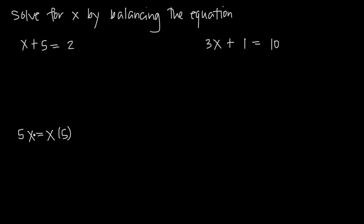So if we want to divide the left hand side by 2, we also have to divide the right hand side by 2 to keep the equation balanced. And if we get a little fancier and want to take the square root of the left hand side, we also have to take the square root of the right hand side in order to keep the equation balanced. Just remember, whatever you do to one side, you also have to do to the other side.